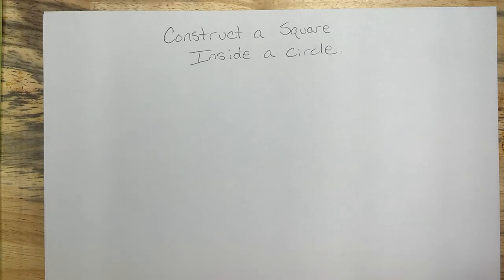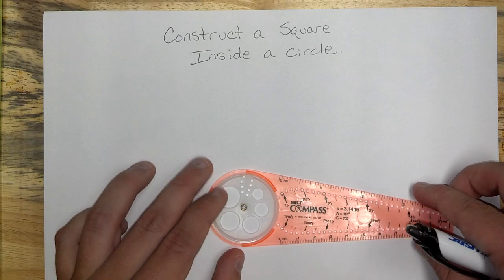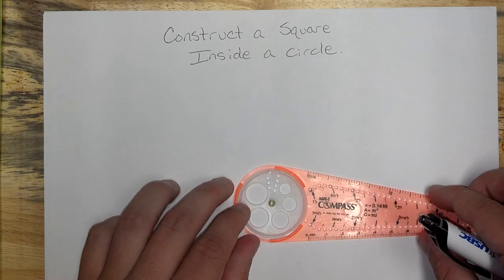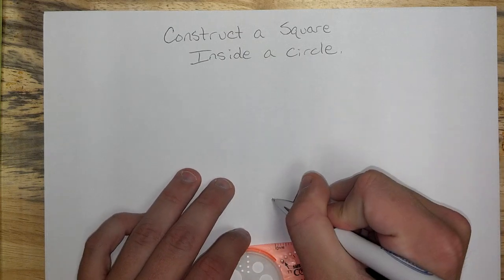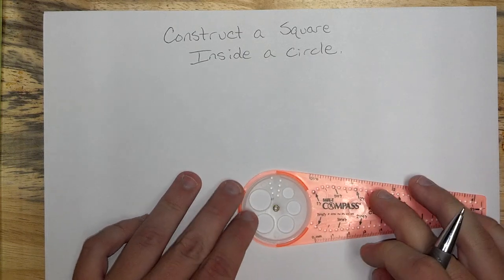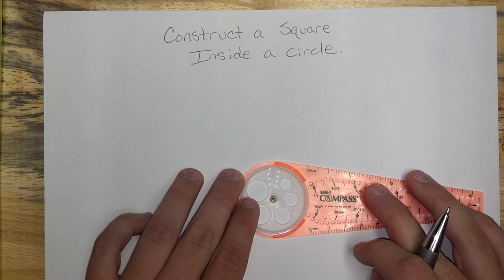To construct a square inside of a circle, first we'll need a circle. So let's go ahead and create one. Mark your center.